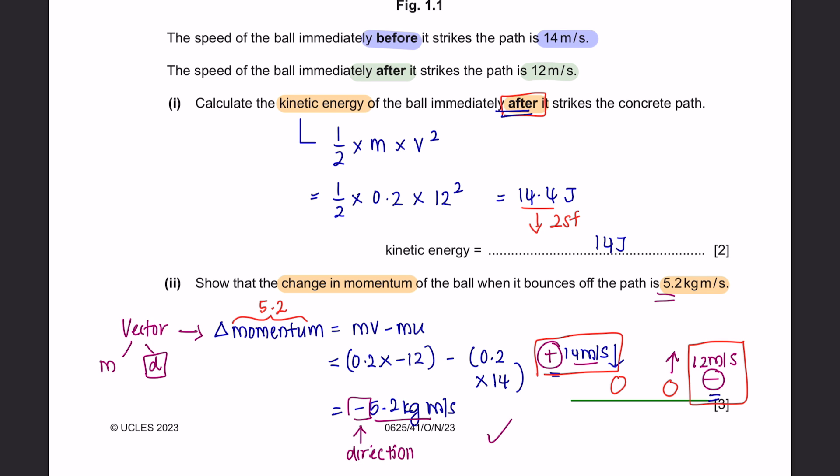Always pay attention when it comes to questions regarding change of momentum. The most common mistake done is that when there is a change of direction, students tend to forget to put a negative symbol.